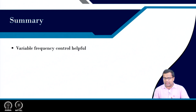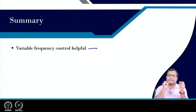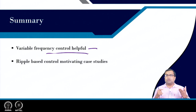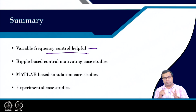In summary, variable frequency control techniques are very helpful but come with the price of variable frequency operation requiring a frequency regulation loop. With growing adoption of digital control platforms, the frequency loop can be implemented simply as a counter-based all-digital PLL without consuming many resources. Ripple-based control is gaining popularity in commercial products, particularly for low duty ratio multi-phase converters using constant on-time current mode control. MATLAB and experimental case studies have demonstrated these advantages.